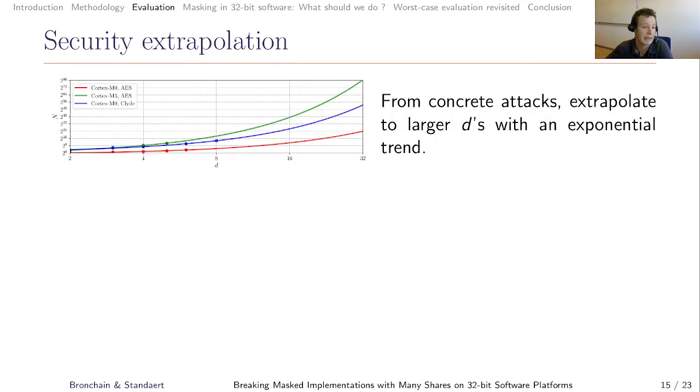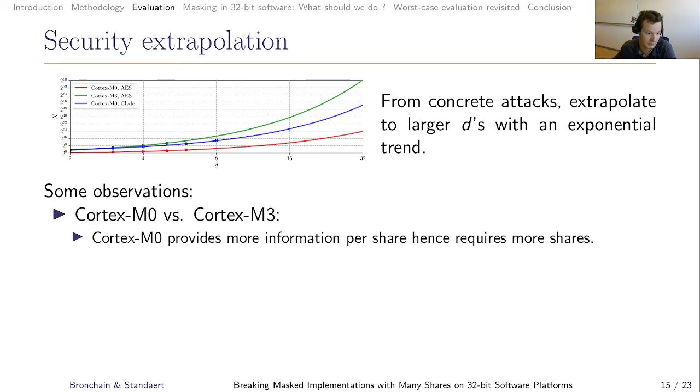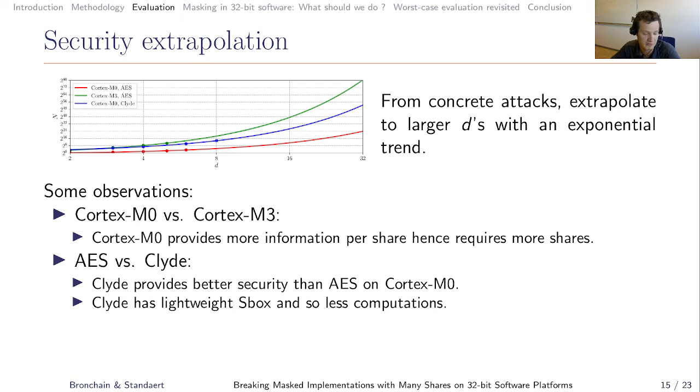With these numbers, we are able to extrapolate that. Each of the concrete attacks from the previous slides is a bullet on this graph. And because we know that the complexity of attacks is exponential with D, we can extrapolate the trends. What do we see, and what do we have as conclusion there? First, we observe that by comparing AES running on Cortex-M0 and Cortex-M3, we see that Cortex-M0 provides more information per share, hence it requires more shares to be secure. Or, for a fixed number of shares, the security is lower on Cortex-M0. Then, we can compare AES and Clyde running on both on the same target, Cortex-M0, and you observe that Clyde provides a better security than the AES. This is probably because Clyde has a lightweight S-box that requires not that much computation in the bit-slice settings, and this is because the Clyde S-box has been designed to be mask-friendly.